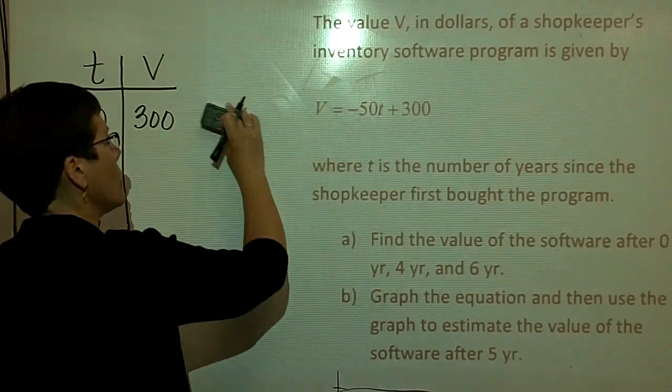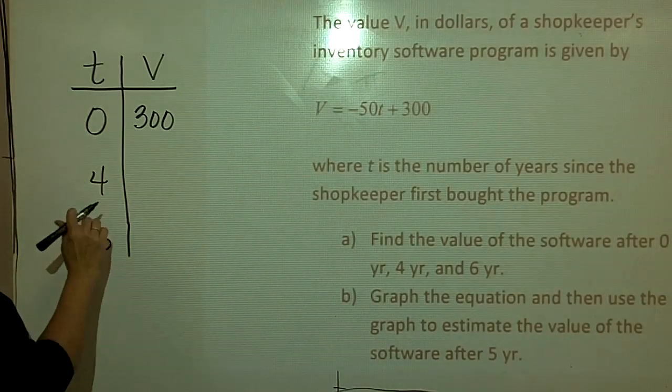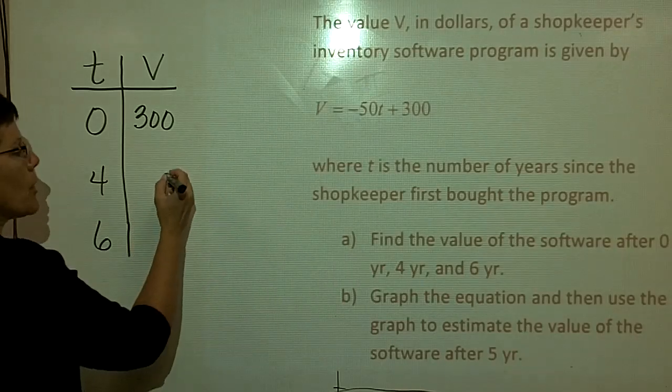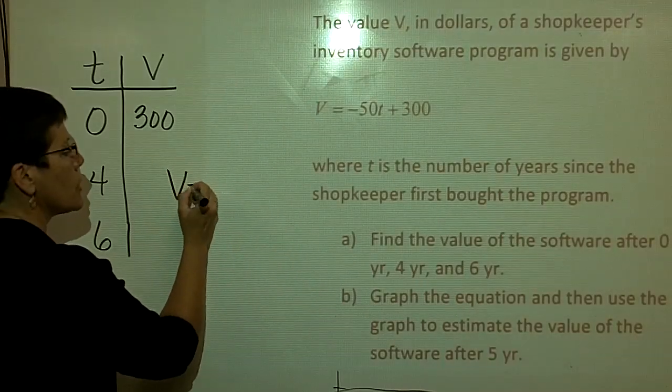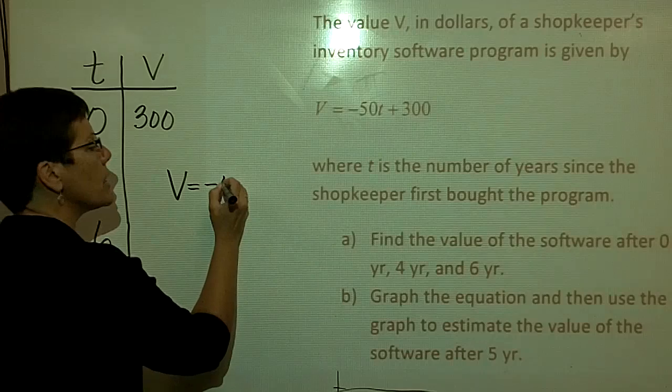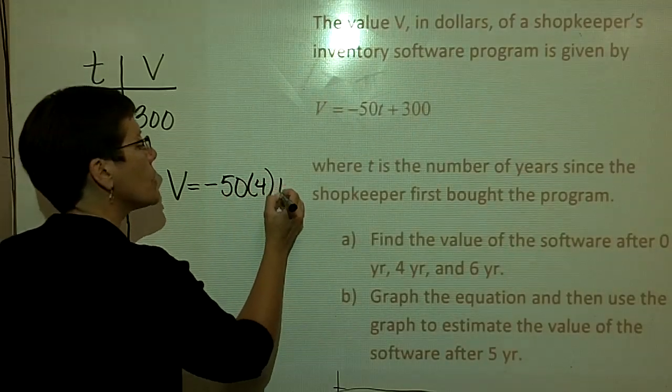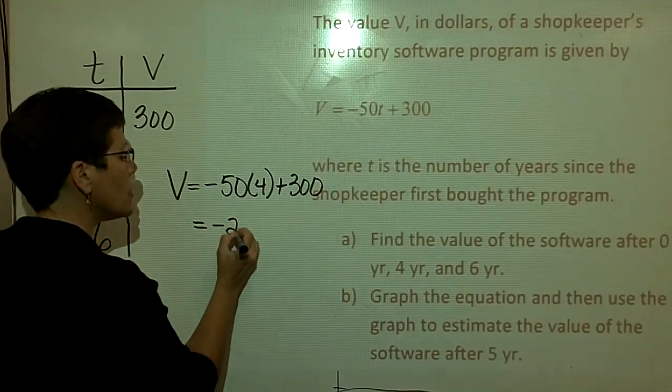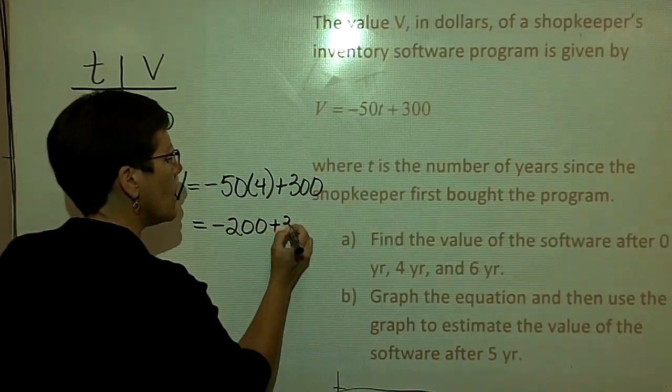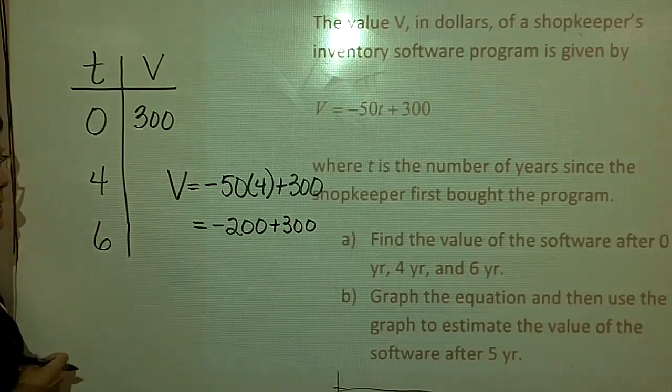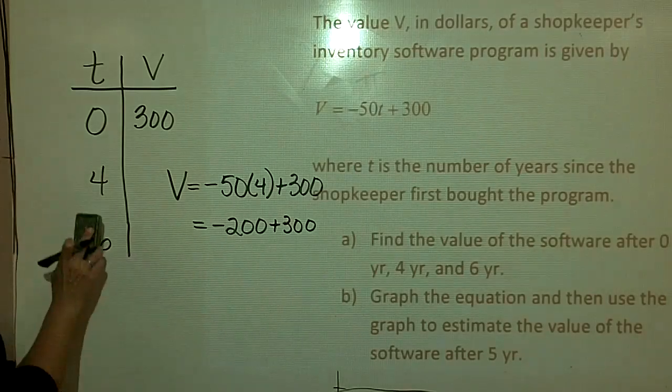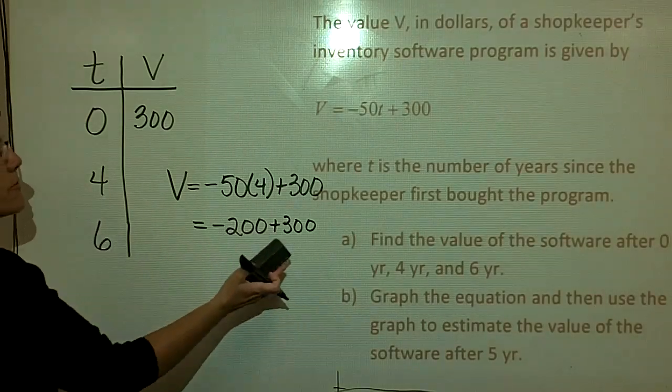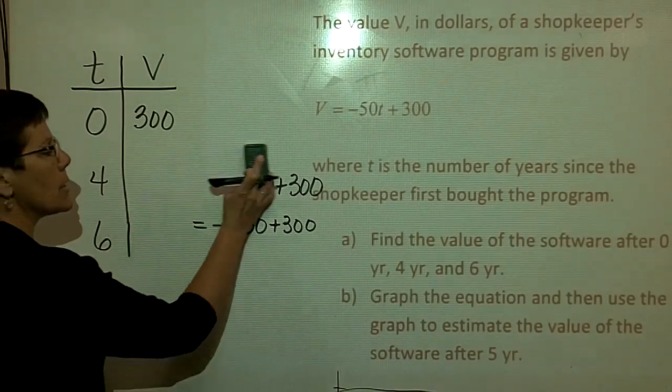Four years later, the value of that software would be negative 50 times four plus the 300, and so that's negative 200 plus 300, or it's only worth $100 at that point. So when T was four, the value negative 200 plus 300 is 100. So I'm going to put 100 in here.